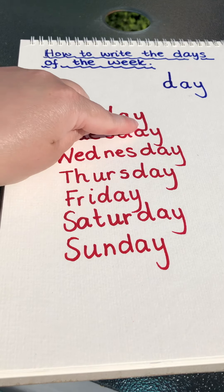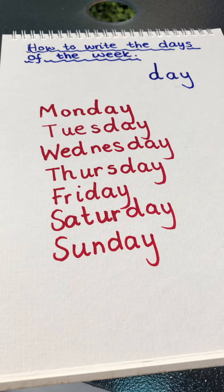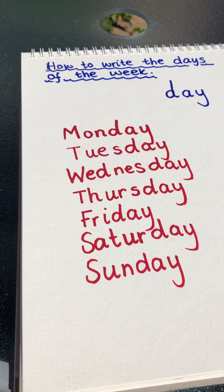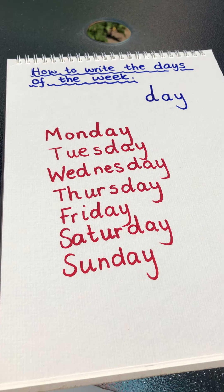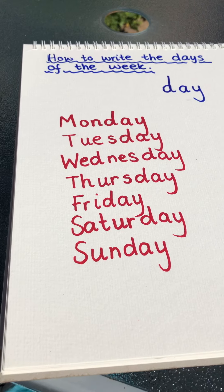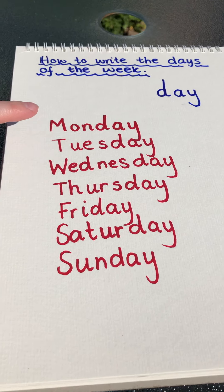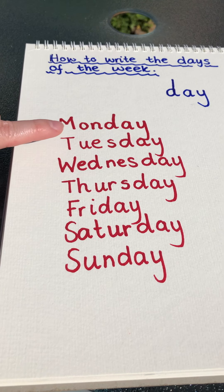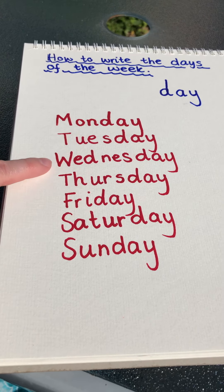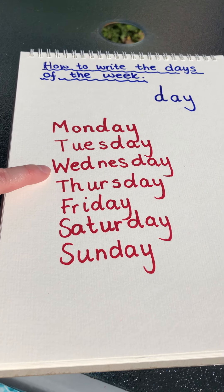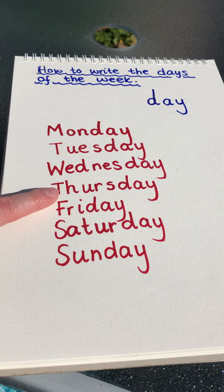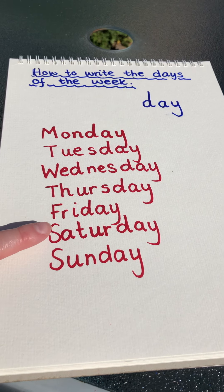If you can remember how to spell them using some silly voices and silly ways of saying them, that will really help you to remember. So let's read them together in a silly way: Mon-day, Tues-day, Wed-nes-day, Thurs-day, Fri-day, Sat-er-day, and Sun-day.